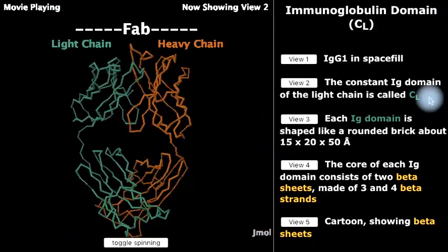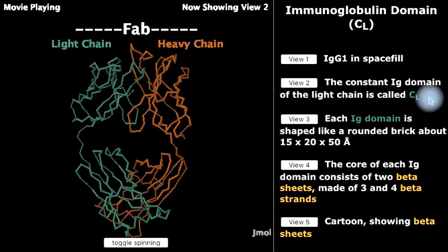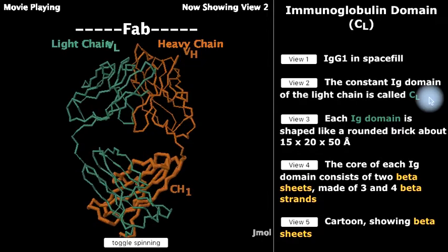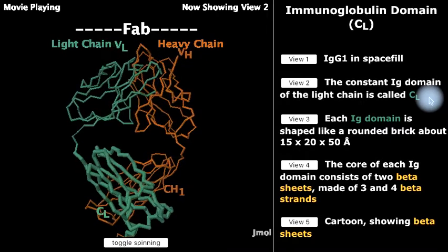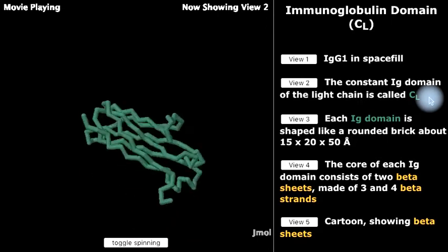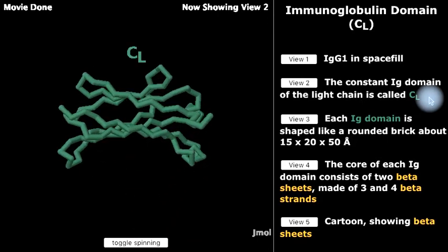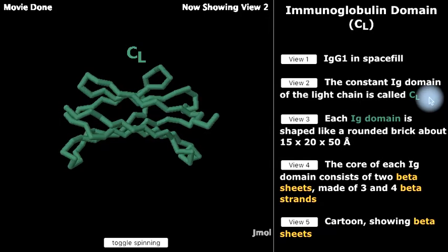Here we have one of the three arms, an FAB arm. It is made up of four immunoglobulin domains. Here is a single immunoglobulin domain, and we'll look at it in some detail.